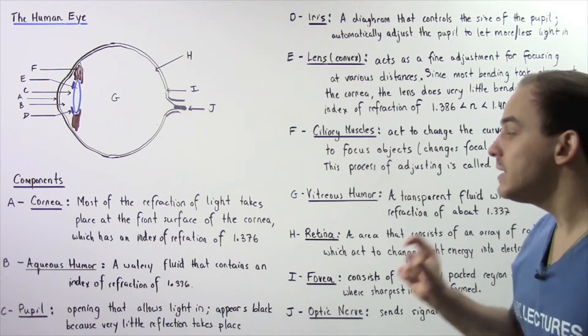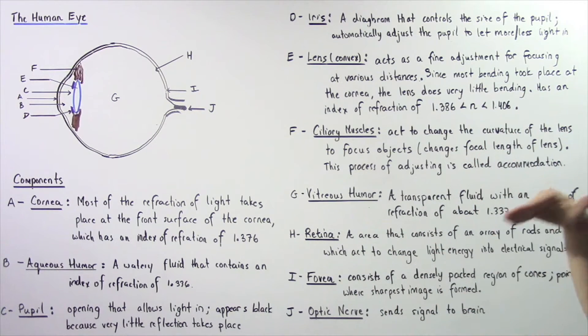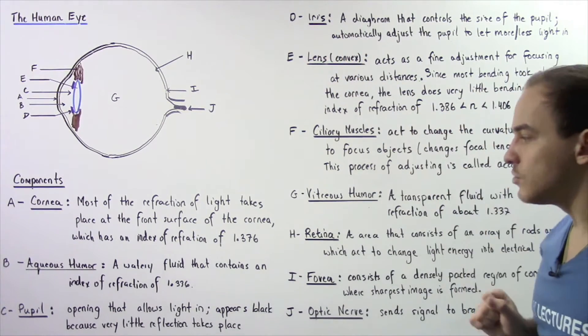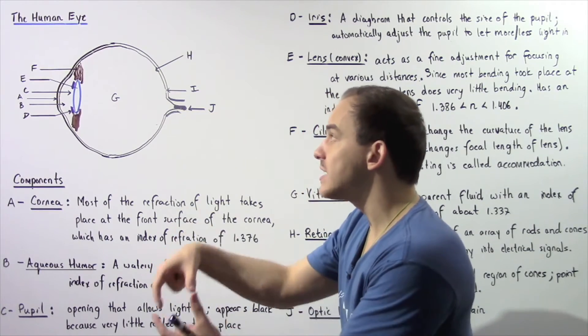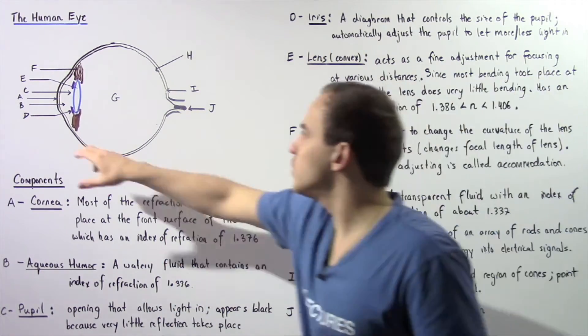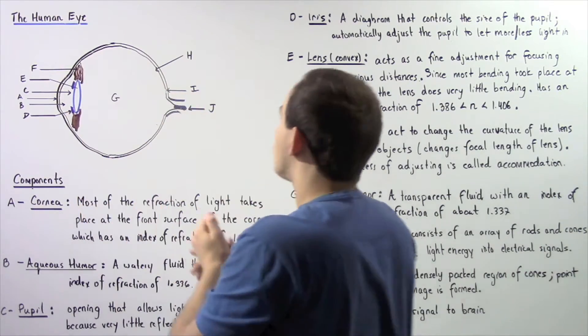This appears black because very little reflection actually takes place within the eye. The iris is something that controls the size of the pupil, the size of the opening of the eye. The iris is shown by section D, given by these two purple regions.